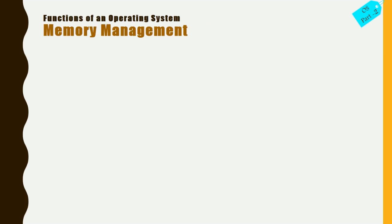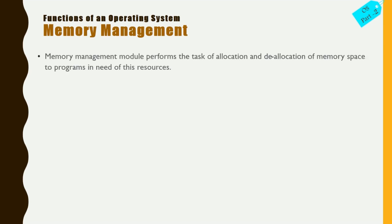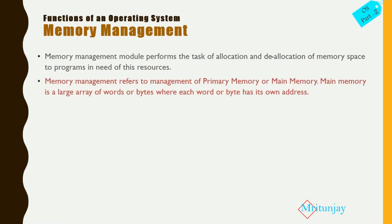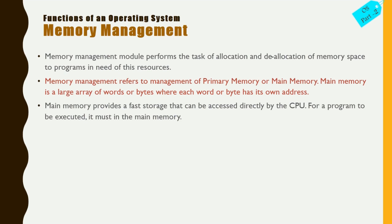Now we will see memory management. The memory management module performs the tasks of allocation and de-allocation of memory space to programs in need. Memory management refers to the management of primary memory or main memory. Main memory is a large array of words or bytes where each word or byte has its own address. It provides fast storage that can be accessed directly by the CPU, and for a program to be executed it must be in main memory.